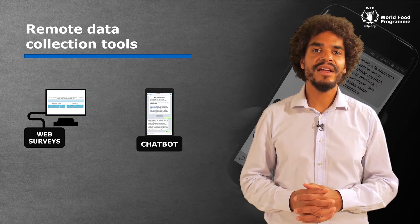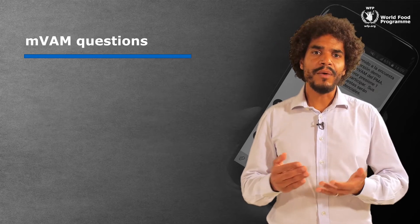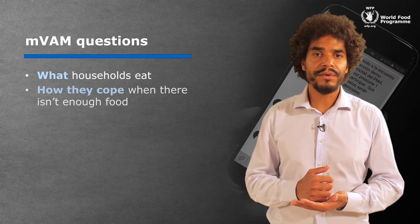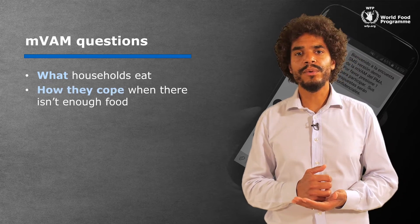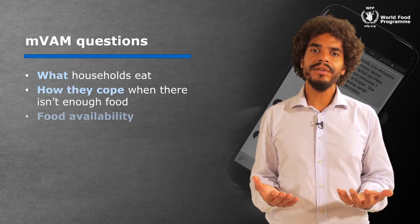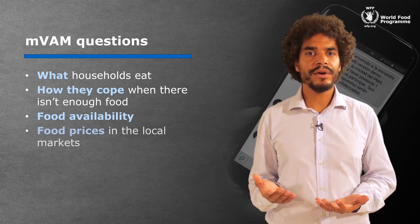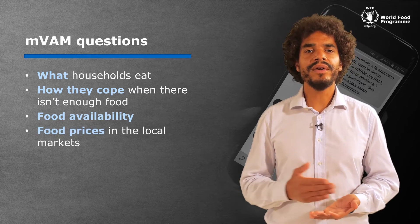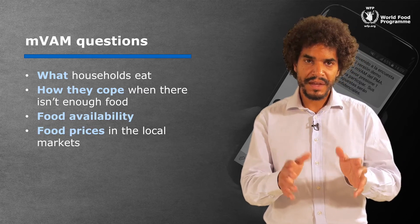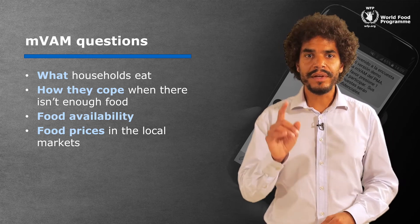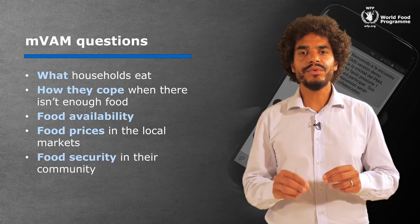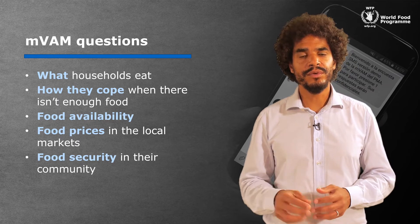In any case, we usually ask about what a household has been eating, how they cope when there isn't enough food to go around. We also ask about food availability, food prices in local markets, and quite often at the end of a survey, we ask an open-ended question. This allows respondents to explain, using their own words, what the food security situation is like in their community.